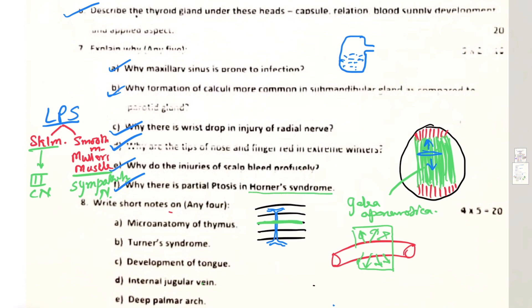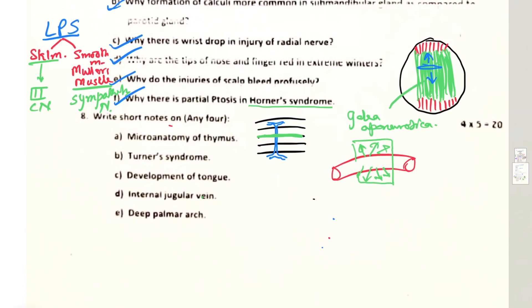Lastly, you have write short notes on any four: you have microanatomy of the thymus, you have to draw this histology, Turner syndrome that is monosomy of the sex chromosome XO, and then you have development of the tongue, internal jugular vein, deep palmar arch. So that's done.